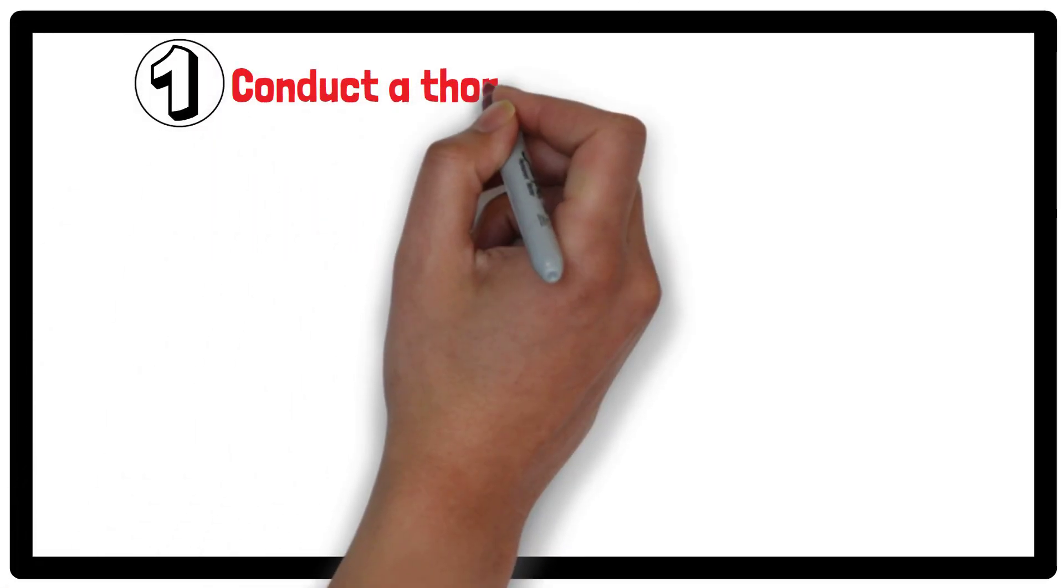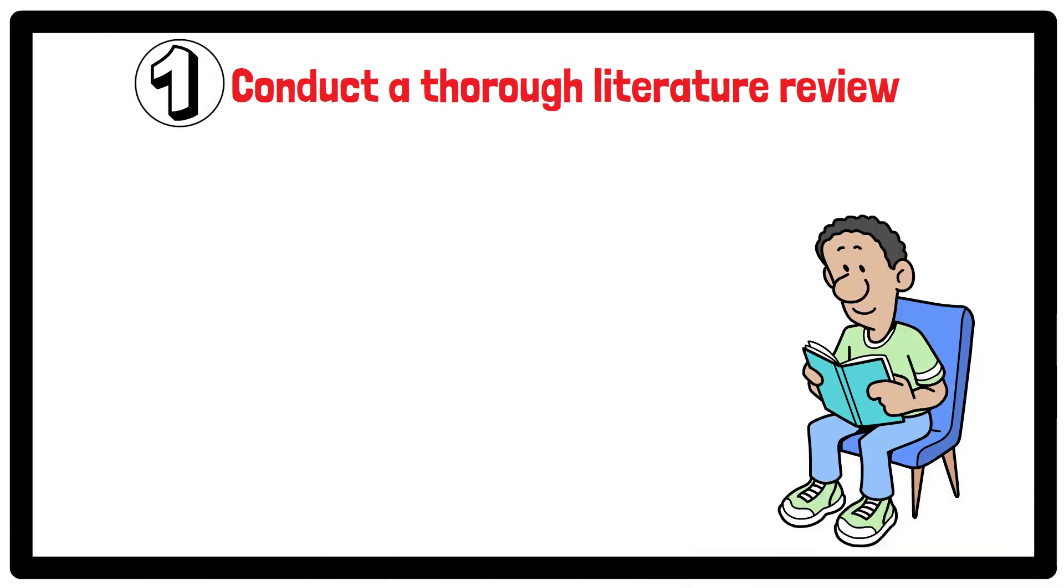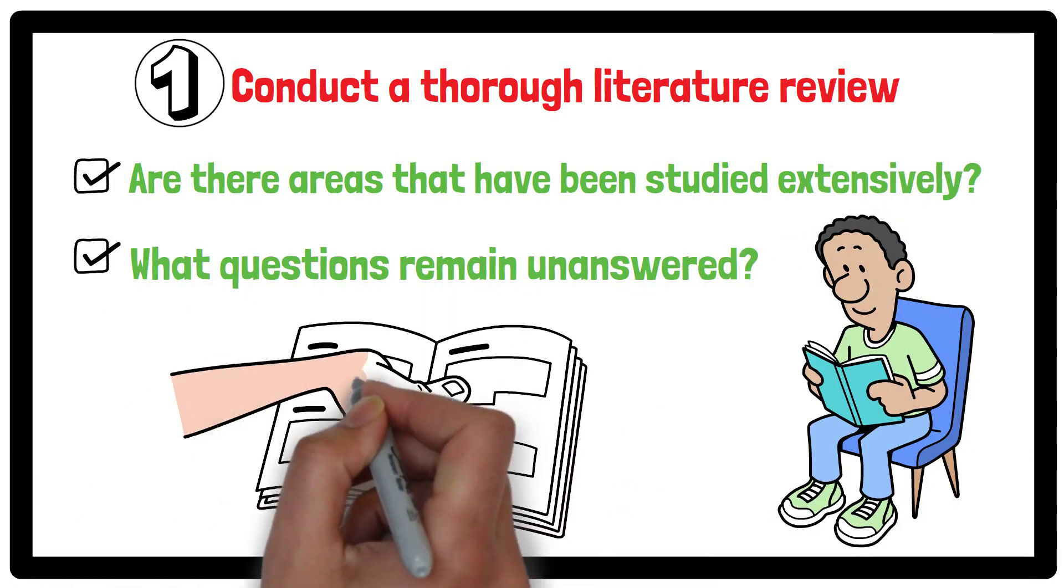To identify a research gap, the first tip is to conduct a thorough literature review. Start by reading existing studies in your area of interest and look for patterns. Are there areas that have been studied extensively? What questions remain unanswered? This review will help you pinpoint where knowledge is lacking.